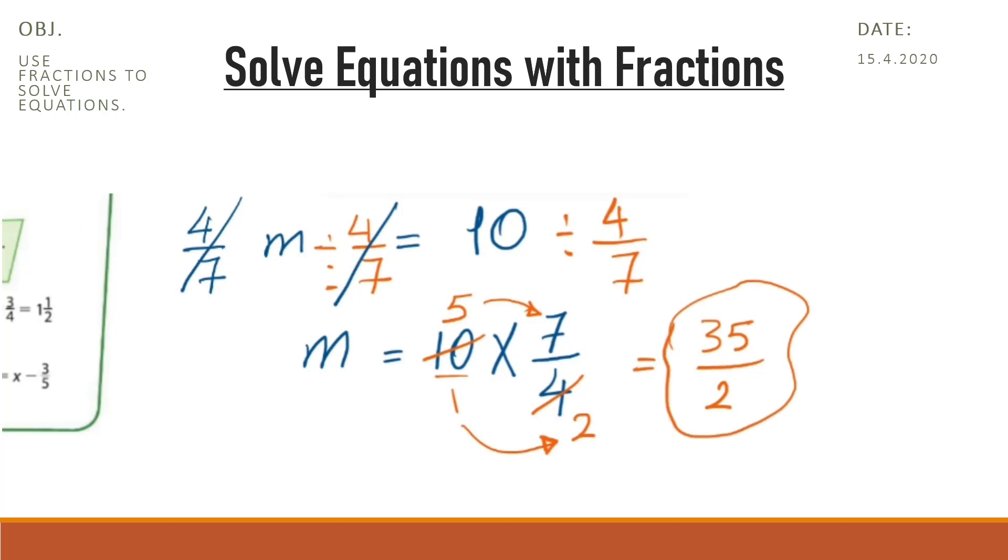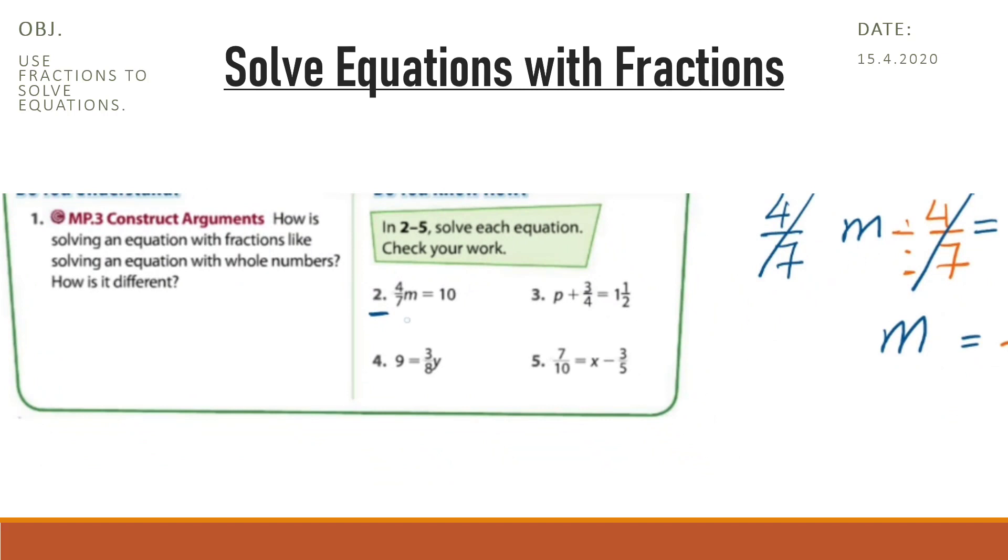Now, this is an improper fraction. We should write it as a mixed number. So divide 35 by 2. 35 divided by 2 is 17. Wait, 35 divided by 2: 2 times 17 is 34, and the remainder is 1. So the final answer here is 17 and 1/2. This is the value of M. And we have the final answer: M equals 17 and 1/2.